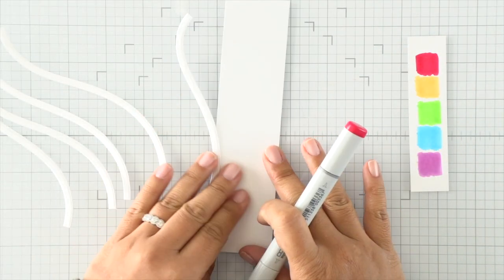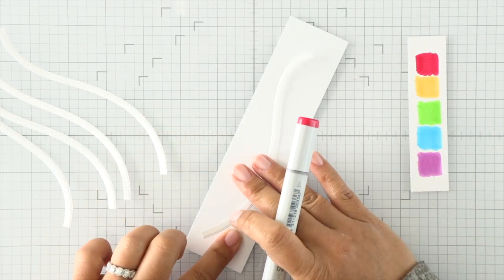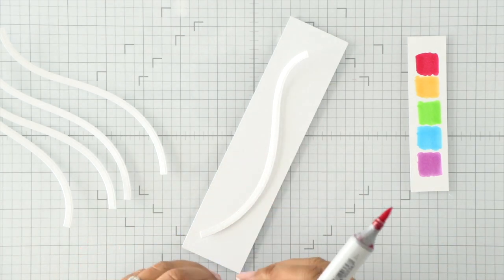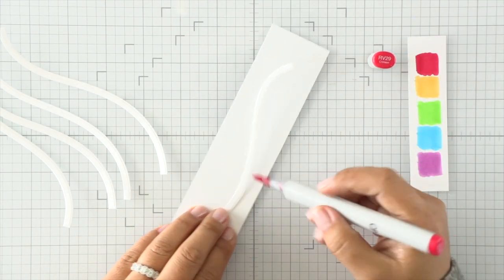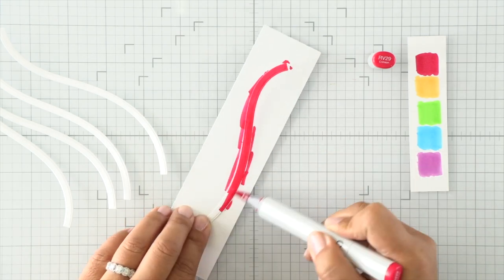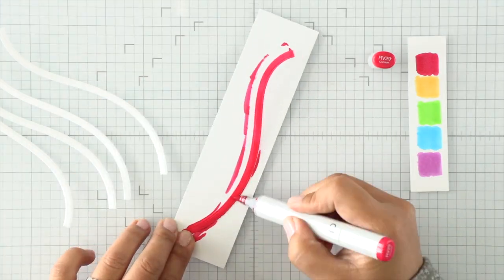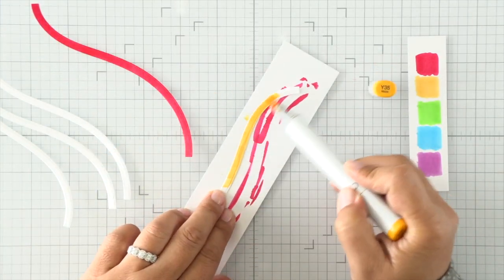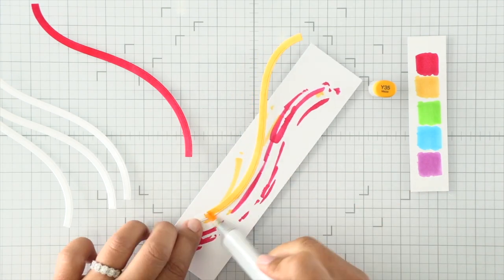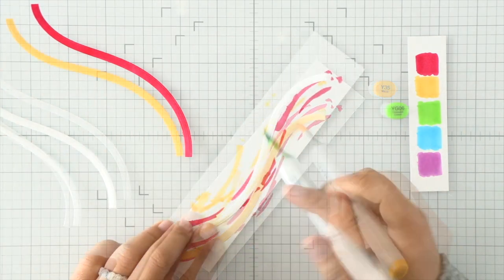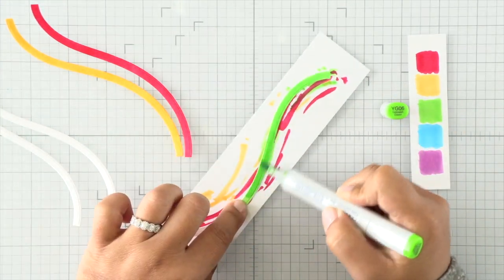I've selected my colors and swatched them out on the right hand side for you to see. I'm just going to color these very quickly and go over it two or three times just to make sure that paper is nice and saturated to get an even amount of color on each of these bands.